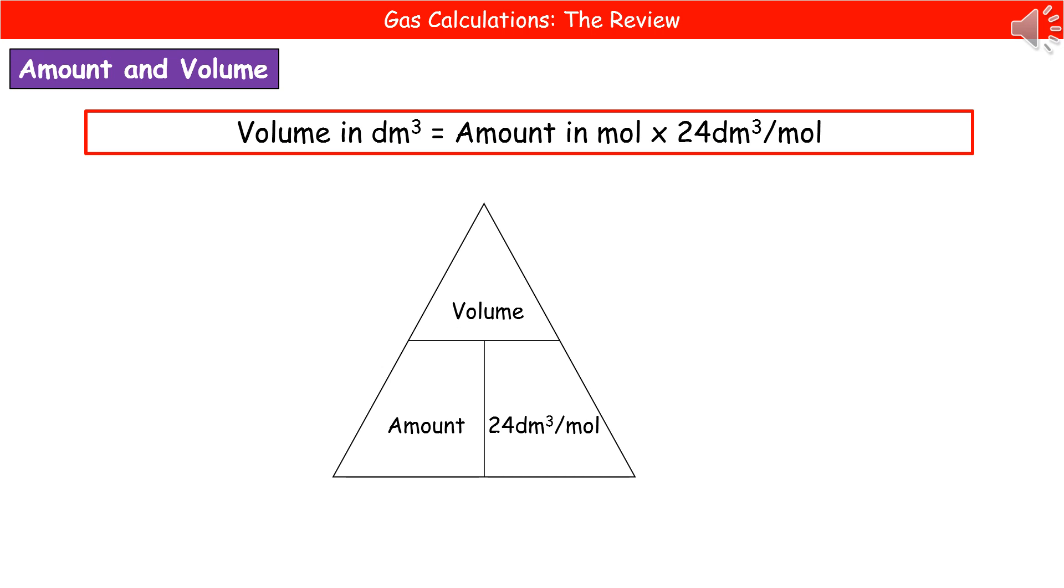The formula we need to remember is that the volume in decimeters cubed equals the amount in moles times by 24 decimeters cubed per mole. You can put that into a triangle if it's easy for you to remember, but make sure you know that the volume in decimeters cubed is the amount in moles times by that 24.